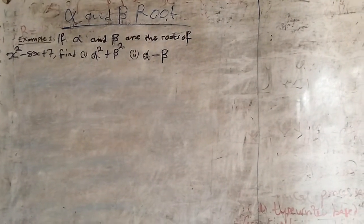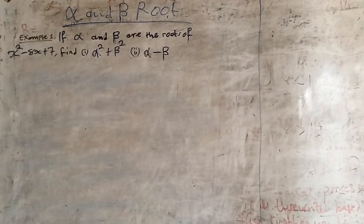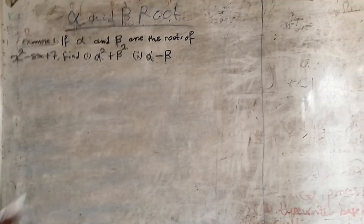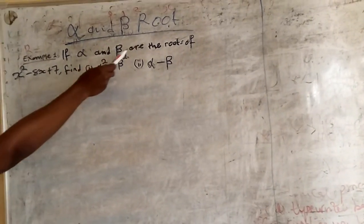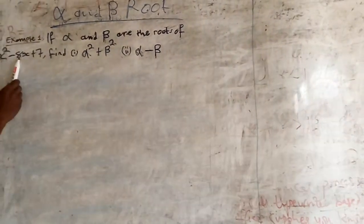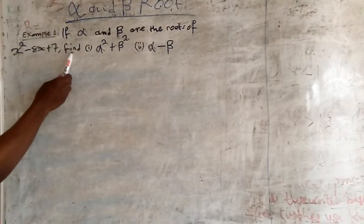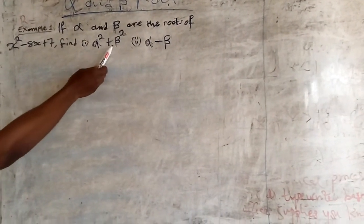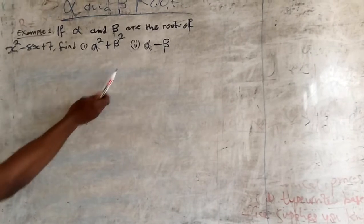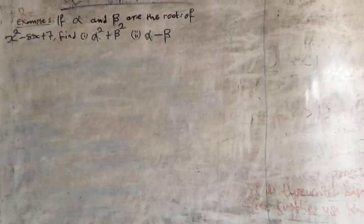we are going to look at alpha and beta roots. Example 1: If alpha and beta are the roots of x squared minus 8x plus 7, find: (i) alpha squared plus beta squared, (ii) alpha minus beta.